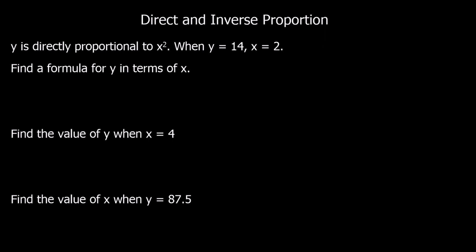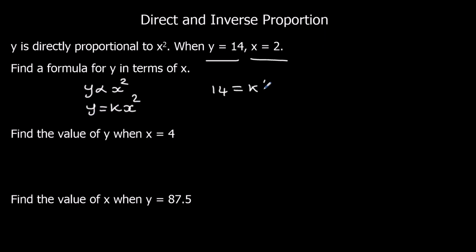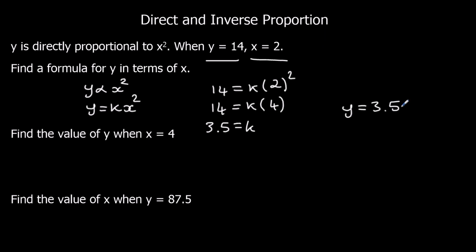Now let's look at a different question. Y is directly proportional to x squared. Since it's directly proportional, the equation is y equals kx squared. When y is 14, x is 2, so we substitute them in: 14 equals k times 2 squared. 2 squared is 4, so 14 equals k times 4. We divide both sides by 4 to get k by itself, and 14 over 4 is 3.5. So k is 3.5, and our formula is y equals 3.5x squared.